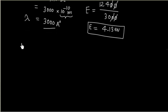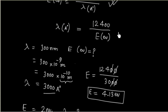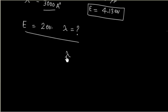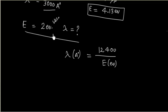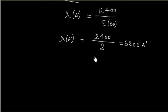Example 2: if a photon has energy of 2 eV, what is the wavelength? Using λ(Å) = 12400 / E(eV) = 12400 / 2 = 6200 Å.